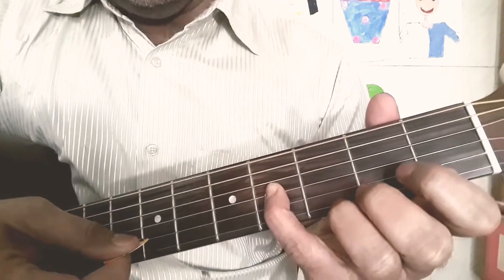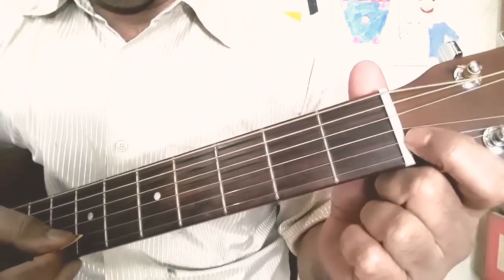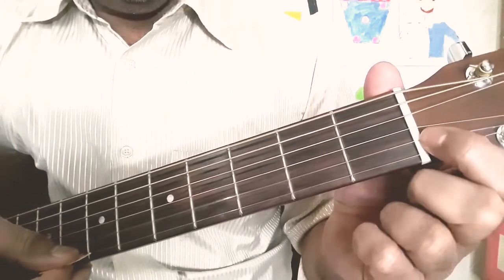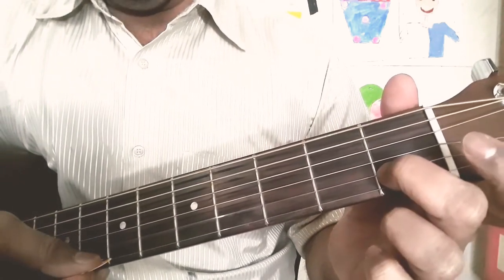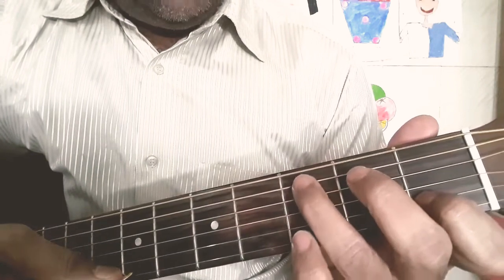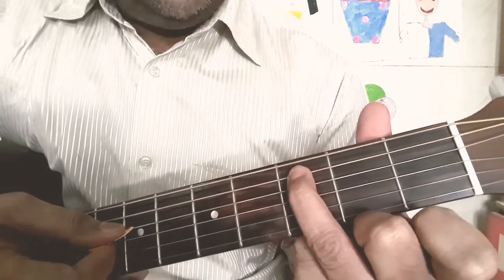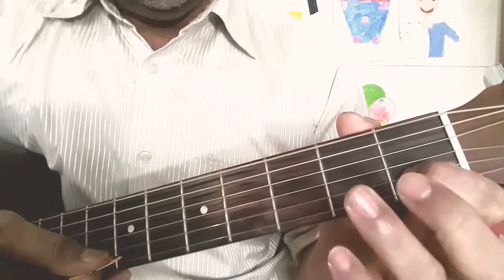This is B, this is B but let us consider this B as we had decided in theory. B half note from here is C. So we have started the C scale from here right and we have ended at here. Both the sound are same.